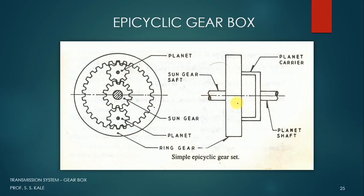Although we can observe only two shafts in the diagram, there are actually three shafts. The first shaft is connected to the sun gear, the second shaft is connected to the planet gear, and the third shaft is connected to the internal gear or ring gear. At the same time, there is an arrangement to lock any one of these gears — we can lock the sun gear, the planet gear, or the ring gear.